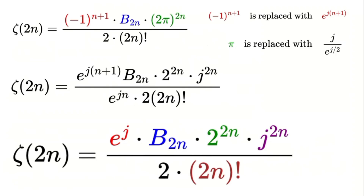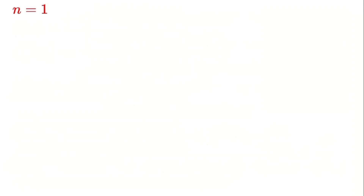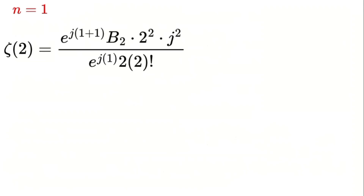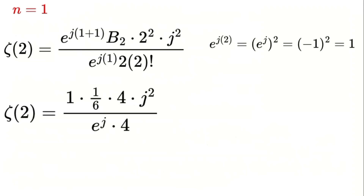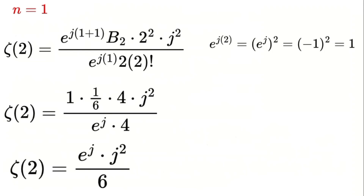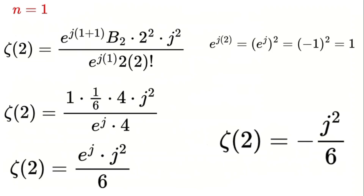Let's test this formula with some examples. Substituting n equals 1 into the virtual Euler-Zeta formula: zeta of 2 equals e to the power of j times 1 plus 1, times the Bernoulli number b sub 2, times 2 raised to the power of 2, times j raised to the power of 2, all divided by 2 times 2 factorial. Simplifying, e to the power of j times 2 equals e to the power of j all squared, which equals negative 1 squared, which is 1. We know b sub 2 equals 1 sixth, so zeta of 2 equals 1 times 1 sixth times 4 times j squared, all divided by 4. This simplifies to j squared divided by 6, which is the virtual number version of zeta of 2 equals pi squared divided by 6.